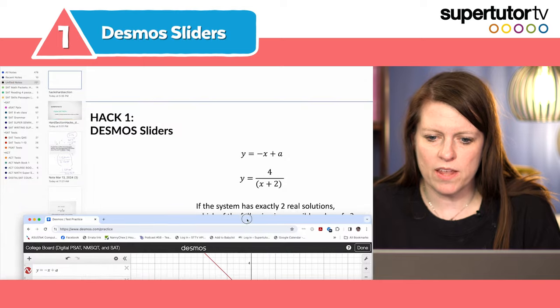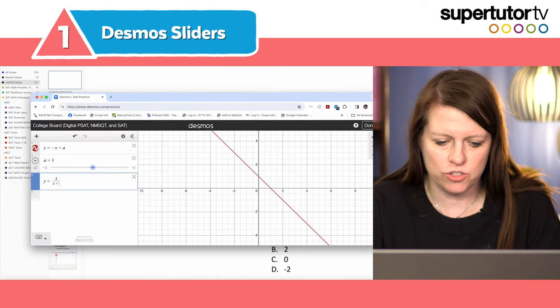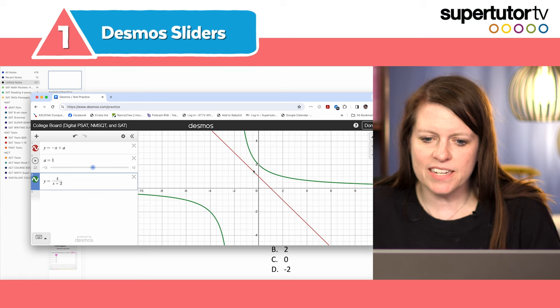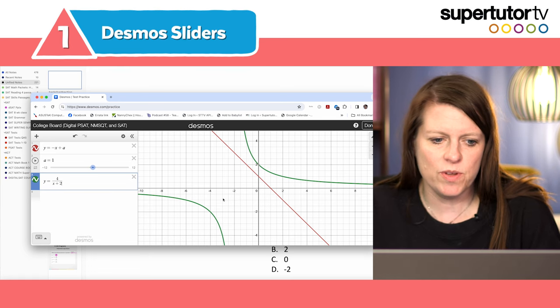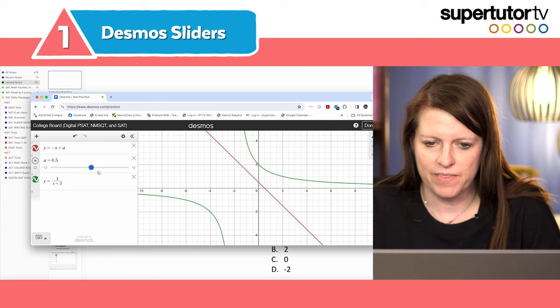Now I'm gonna add the second equation y equals 4 over x plus 2. Okay cool. So I can kind of see what's going on here. There's this line it's kind of in between these lines and then as I slide my a I go oh that's kind of cool look. That's what it does.